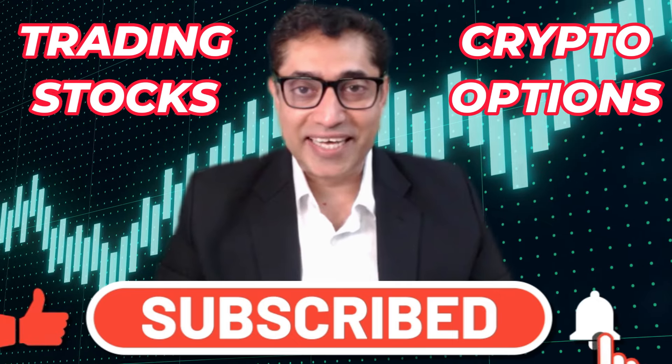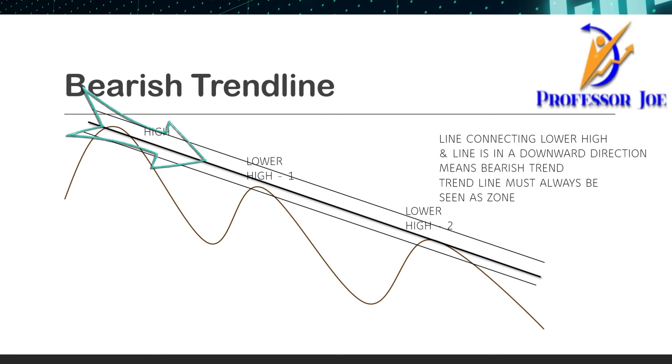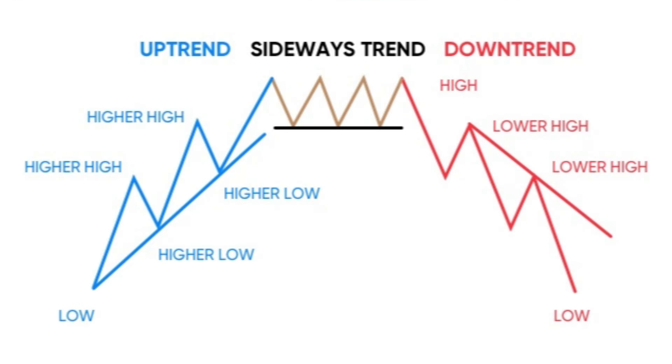So what are trend lines? Trend lines are lines that are drawn on a swing high and a swing low, especially in a trending market. Basically there are three types of trends: an uptrend, a downtrend, and a sideways trend. Trend lines are most useful when the market is trending in one direction.